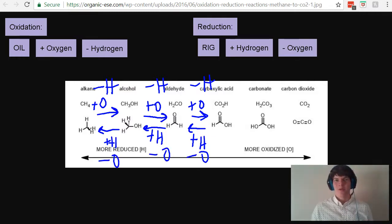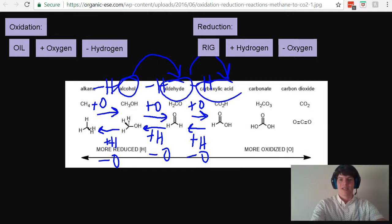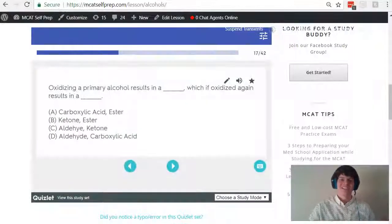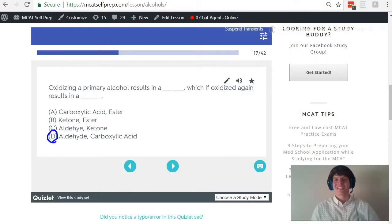And in this case, the question is asking us about an alcohol being oxidized. So we're starting with this alcohol, and we are oxidizing it once to become an aldehyde, and once again to become a carboxylic acid. For this reason, answer choice D is the correct answer here.